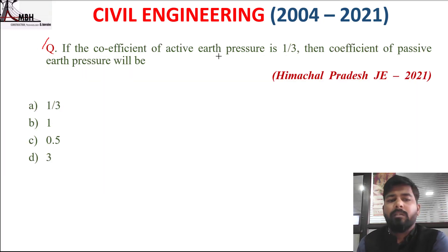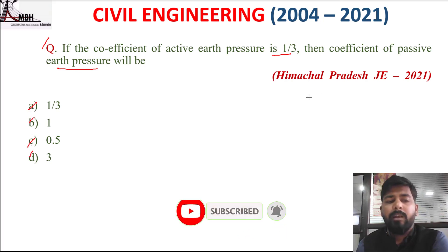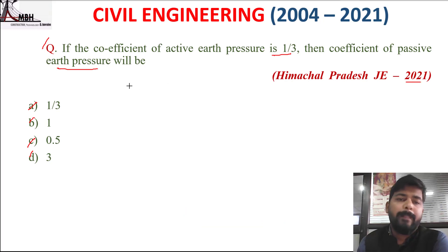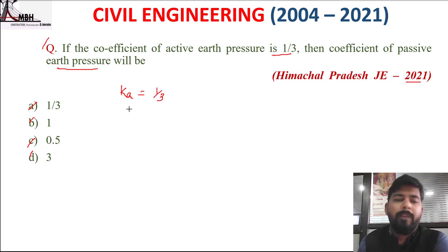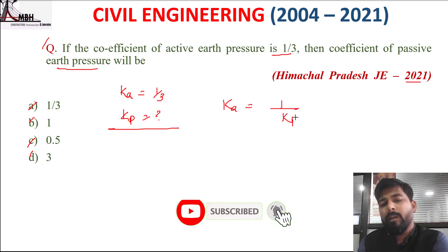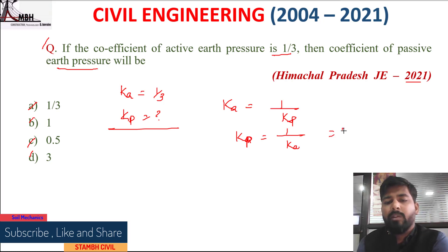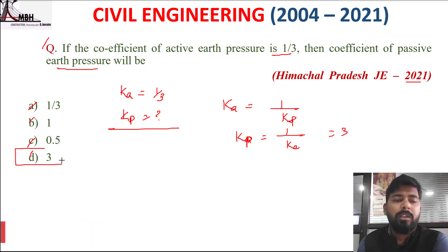Next question: if the coefficient of active earth pressure Ka = 1/3, then the coefficient of passive earth pressure Kp will be: A 1/3, B 1, C 0.5, D 3. Since Ka = 1/Kp, we have Kp = 1/Ka = 1/(1/3) = 3. Option D is correct.